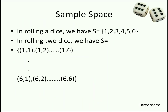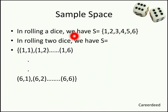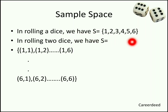A die is a cube-shaped structure and contains 6 faces numbered from 1 to 6. While rolling a single die, the total sample space is 6 — you can get any number from 1 to 6.